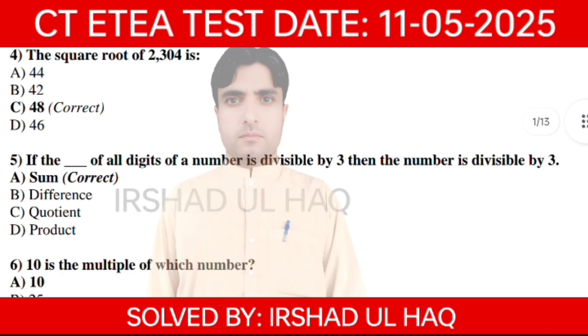Question 5. If the sum of all digits of a number is divisible by 10, then the number is divisible by 3. Option number A: Sum.